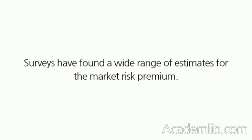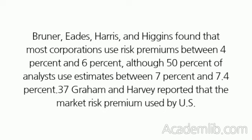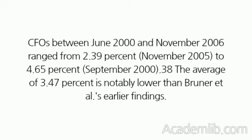Surveys have found a wide range of estimates for the market risk premium. Bruner, Eads, Harris, and Higgins found that most corporations use risk premiums between 4% and 6%, although 50% of analysts use estimates between 7% and 7.4%. Graham and Harvey reported that the market risk premium used by U.S. CFOs between June 2000 and November 2006 ranged from 2.39% (November 2005) to 4.65% (September 2000). The average of 3.47% is notably lower than Bruner et al.'s earlier findings.